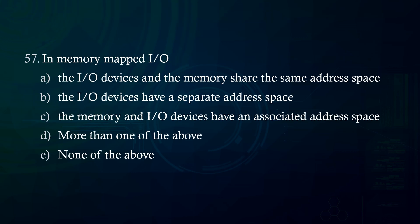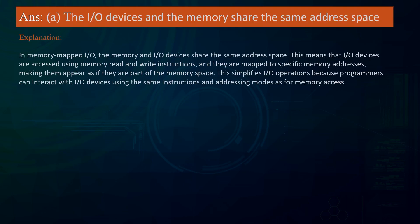In memory-mapped I/O: A. The I/O devices and the memory share the same address space B. The I/O devices have a separate address space C. The memory and I/O devices have an associated address space D. More than one of the above E. None of the above. Answer: The I/O devices and the memory share the same address space. Explanation: In memory-mapped I/O, the memory and I/O devices share the same address space. I/O devices are accessed using memory read and write instructions and mapped to specific memory addresses, making them appear as part of the memory space. This simplifies I/O operations as programmers can interact with I/O devices using the same instructions as for memory access.